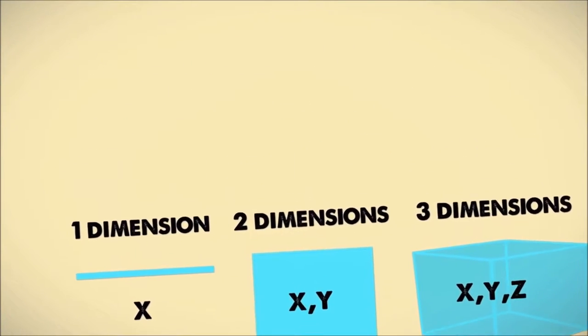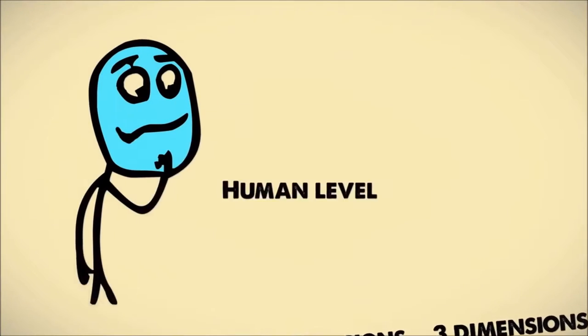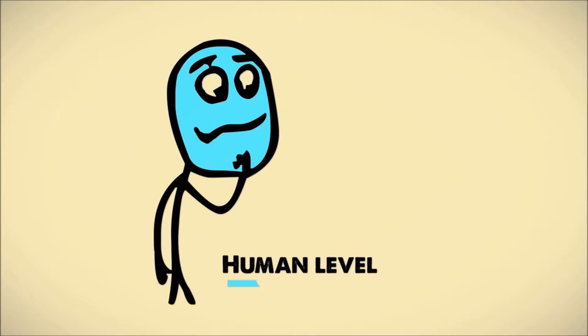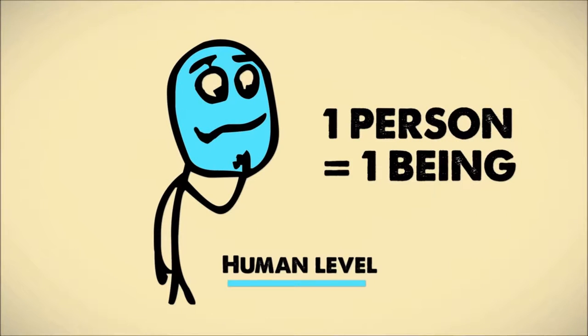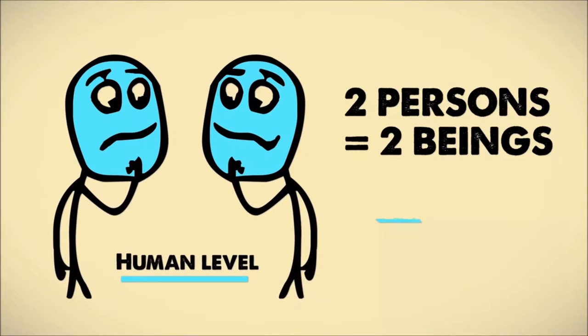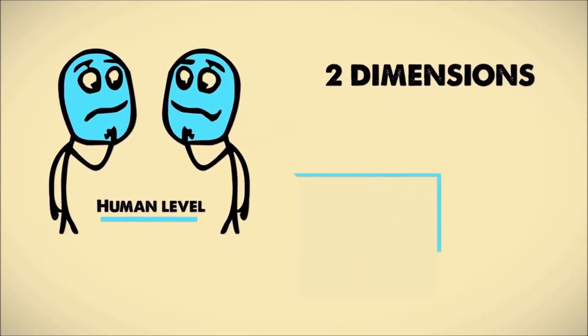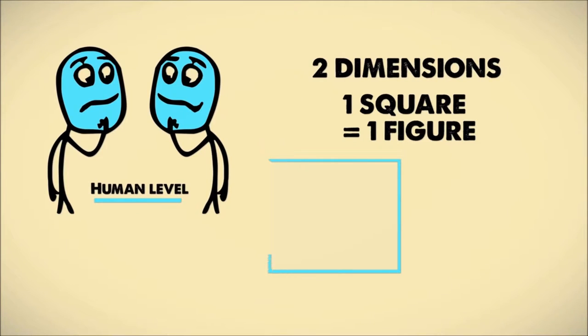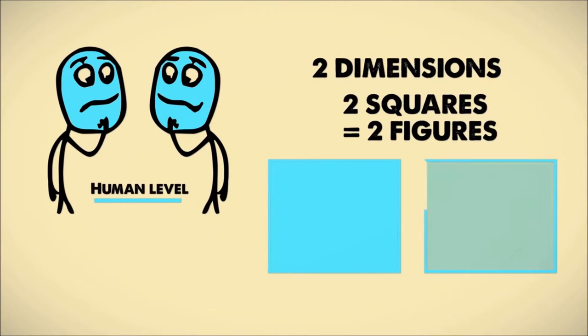Now the Christian account of God involves just the same principle. The human level is a simple and rather empty level. On the human level, one person is one being, and any two persons are two separate beings. Just as, in two dimensions, one square is one figure, and any two squares are two separate figures.